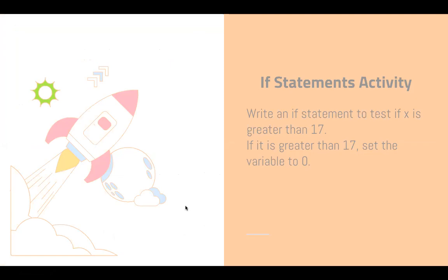If statement activity: go on Khan Academy and write an if statement to test if x is greater than 17. Set variable x to whatever number you like — 23, 1005, or even 6 million. Then compare it: if x is greater than 17, set x to zero. Give it a try and I'll go over the answer. Assuming you know how to make a variable already — if not, go back to earlier videos.